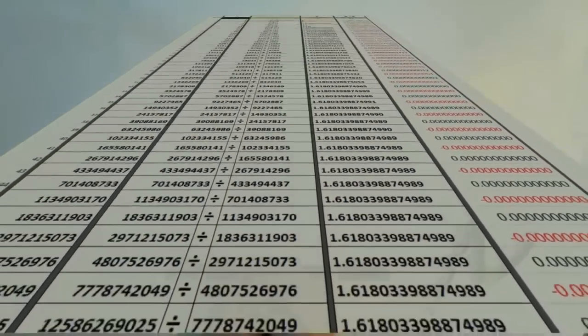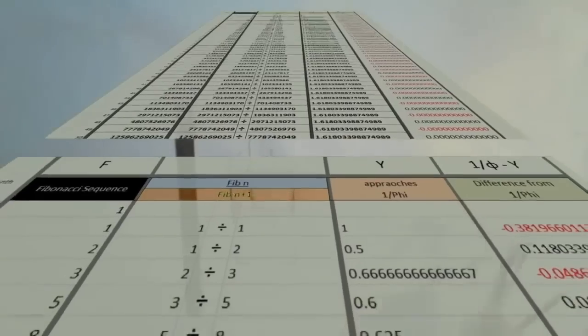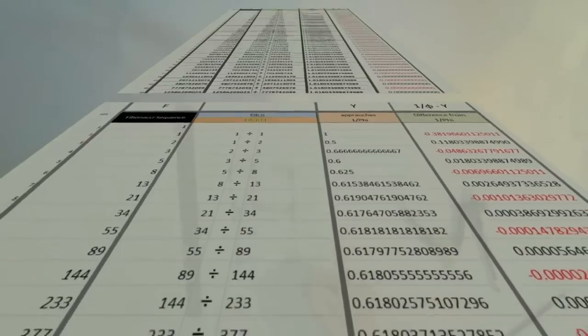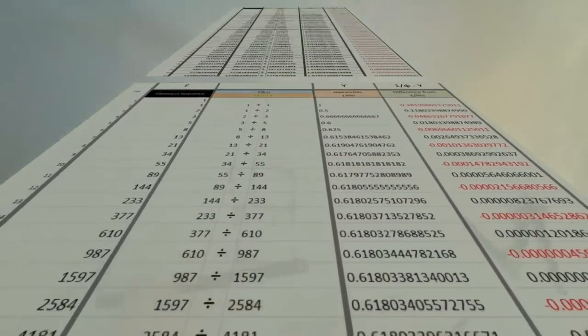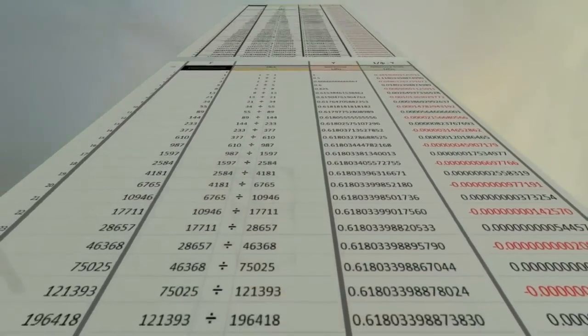And that's why the squares of one, one, two, three, five, and eight add up to eight times 13. Now, if we continue this process, we'll generate rectangles of the form 13 by 21, 21 by 34, and so on. Now, check this out.